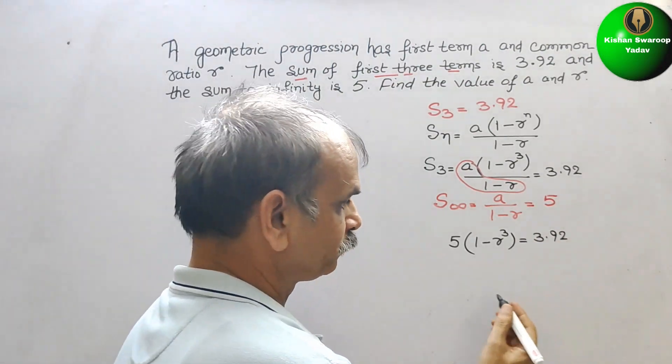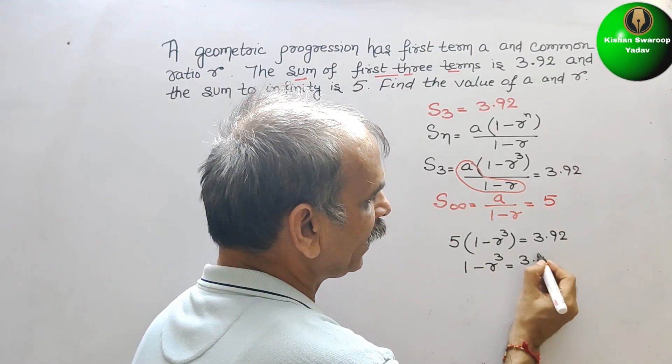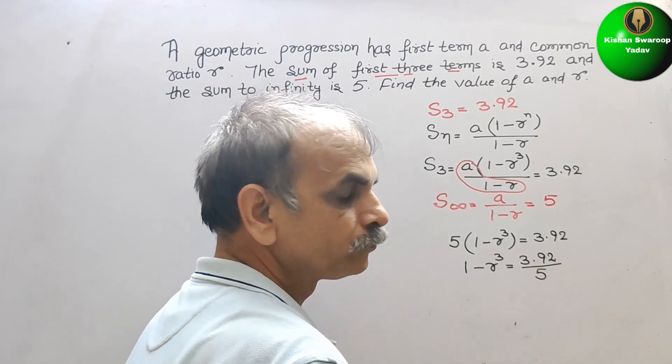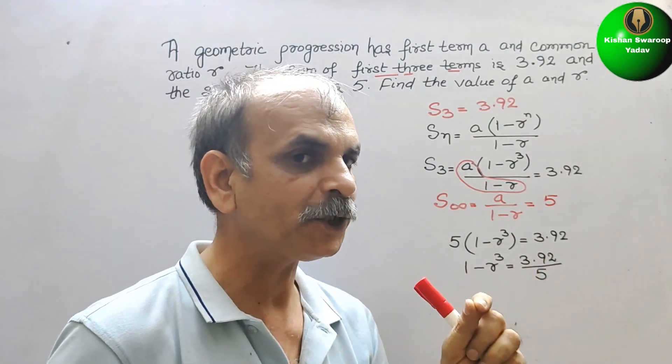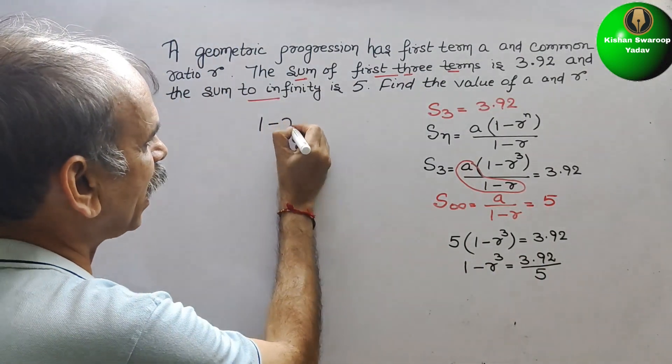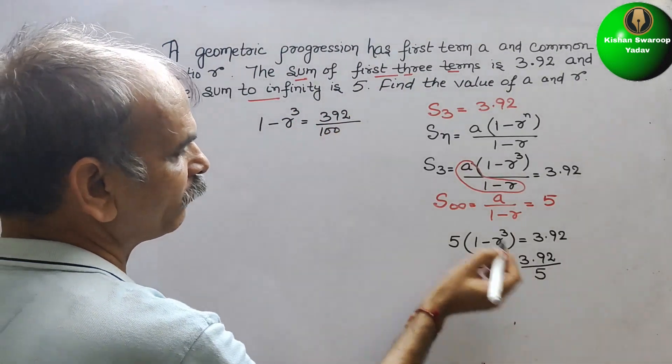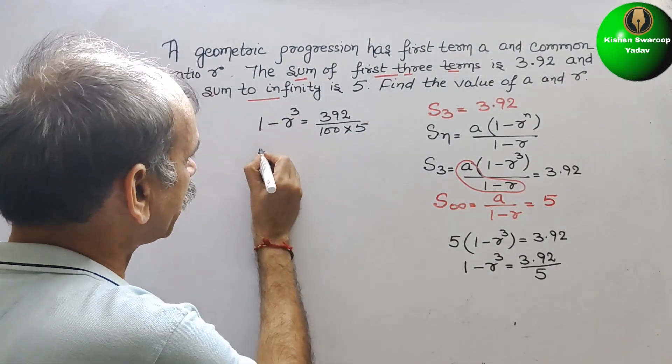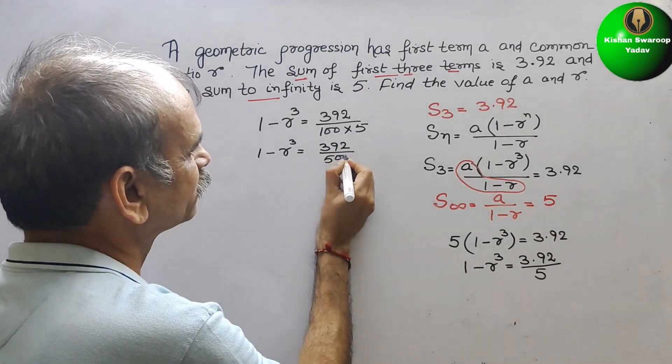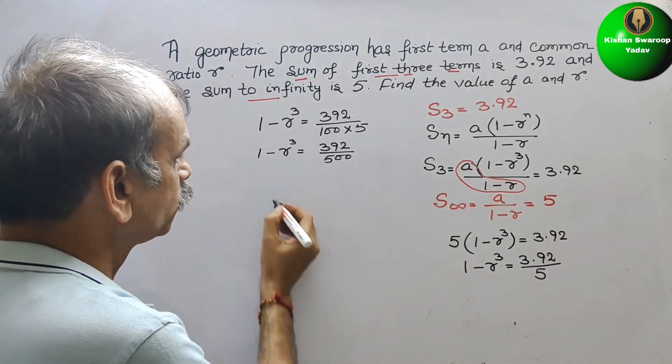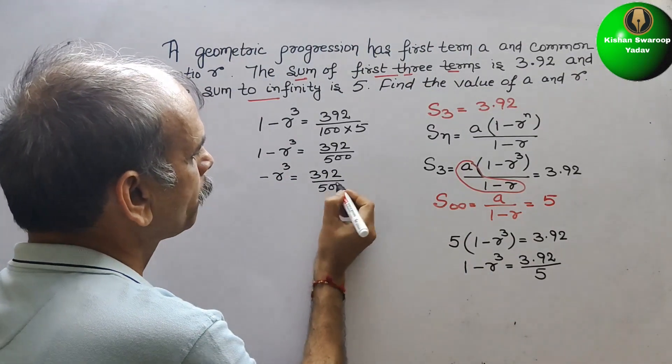What is 1 minus R cube? It is equal to 3.92 divided by 5. You can see 3.92, how we will write? 392 by 100. So now it will be 1 minus R cube is equal to 392 by 100 times 5, which is 500. Bring this 1 to this side. So it will be minus R cube is equal to 392 by 500 minus 1.